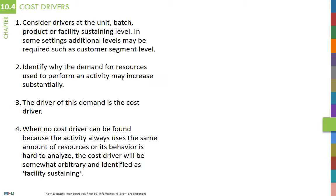A large percentage of indirect costs are fixed, and the question becomes: how do fixed costs vary? Fixed costs are only fixed over a certain range. Over the long term, all costs can change. Large changes in an activity performed with fixed resources require additional resources. Consider a production department: a machine is a fixed cost, and increasing the volume produced by an extra unit does not affect the cost of the machine.